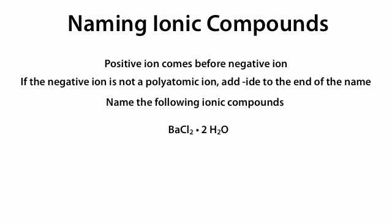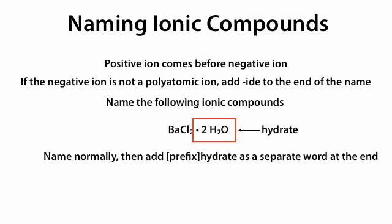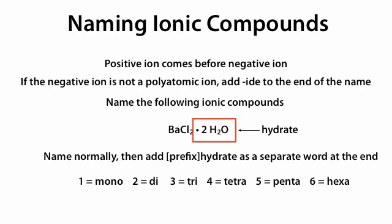Next we have BaCl2·2H2O. What is that ·2H2O? When we see this ·2H2O, this is called a hydrate. This means the compound contains two molecules of water. To name hydrate compounds, we name the compound normally and add a prefix plus 'hydrate' as a separate word at the end. If we have one hydrate, the prefix is mono.